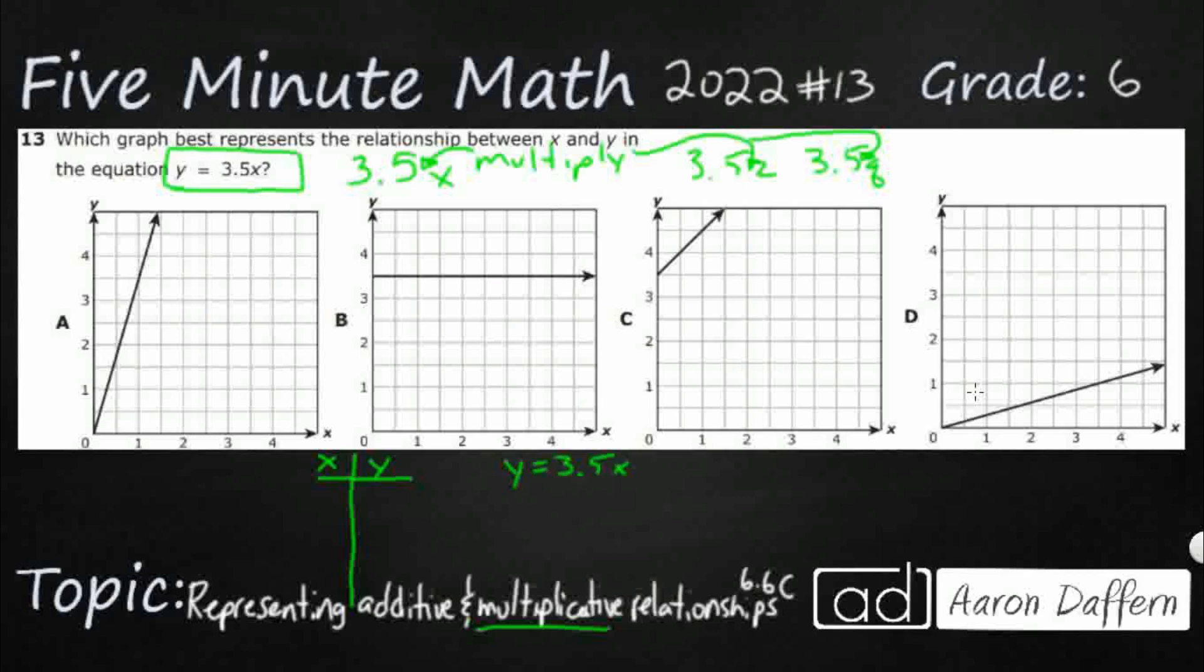And our equation here is y equals 3.5x. So x is our independent variable. We start with that. Start with zero. So y equals 3.5 times zero. So y equals zero. So that's important because that means one of the coordinates is zero, zero. This is the origin.